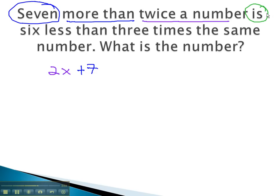Next is the word is. We know is translates to an equal sign. 6 less than implies a subtraction problem, also built backwards, so we subtract the 6. To find out what we subtract from, we keep reading. 3 times the same number. 3 times that same number that we don't know, x.